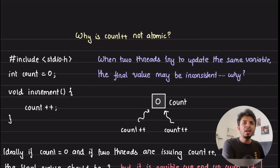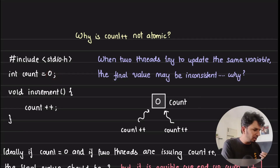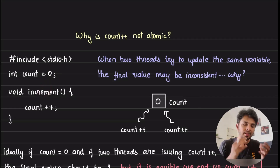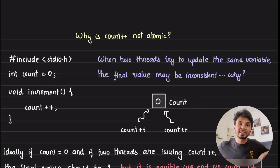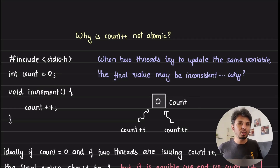To set a context, let's say I have a global variable called count, initially set to zero. I have a function called increment which increments it by one using the ++ operator. Now when I have two threads — thread one and thread two — both are invoking the same increment function. I would expect the final value to be two.